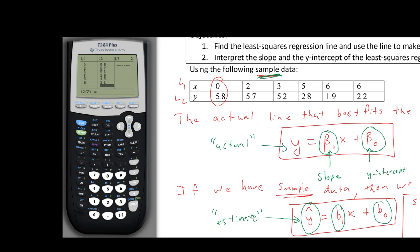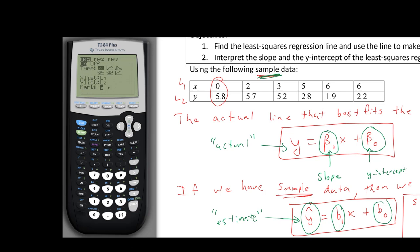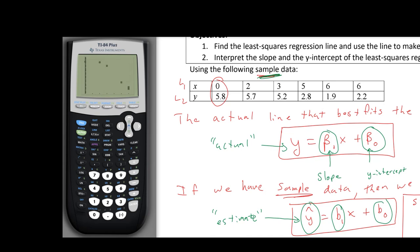If we quit out, we can do a scatter plot. Go to 2nd STAT PLOT, have one plot on and everything else off. I'm doing L1 versus L2 — that's a scatter plot. Go to ZOOM and select the ninth option, Zoom Stat. You can see the dotted lines; the one on the y-axis is at 0, 5.8. As x increases, the y values start to decrease — they go downward. There's a line that will best fit this data going in a downward direction.